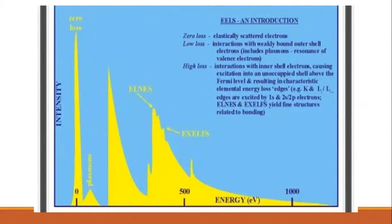ELS interactions: zero loss from elastically scattered electrons. Low loss: interactions with weakly bound outer shell electrons. High loss: interactions with inner shell electrons causing excitation in an occupied shell above the Fermi level, resulting in characteristics.